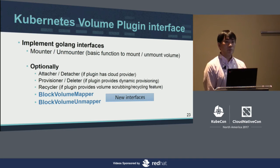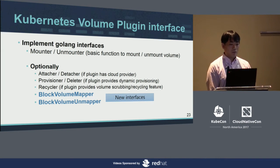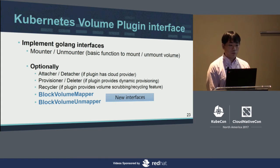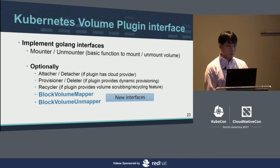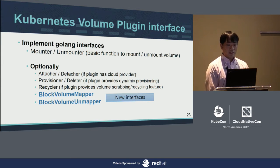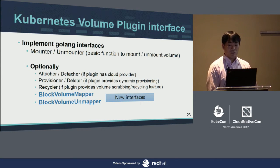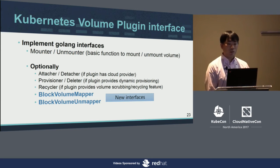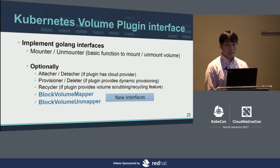To implement a storage plugin for Kubernetes, at minimum the plugin must have mounter and unmounter interfaces, used for mounting and unmounting volumes to the kubelet node and into the container. Optionally, plugins can have attach and detach interfaces if they have cloud provider attach functionality. Provisioner and deleter interfaces are needed if the plugin provides dynamic provisioning. The recycler interface is needed for volume scrubbing and recycling features.